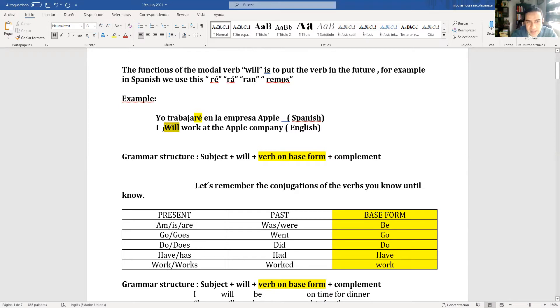Si se dan cuenta, la función del will en inglés es poner este acento en el verbo. Yo trabajaré, él trabajará, ellos trabajarán, nosotros trabajaremos. El will es igual para todos los sujetos: I will, you will, he will, it will, they will, we will, etc. It's the same for all the subjects.